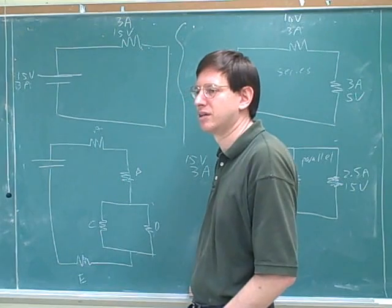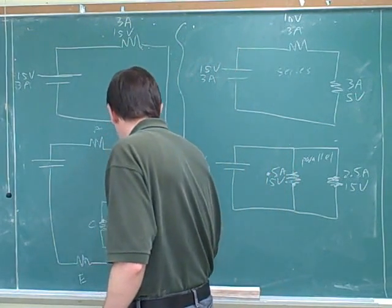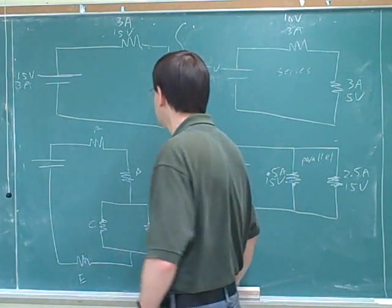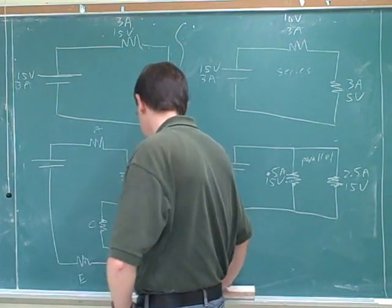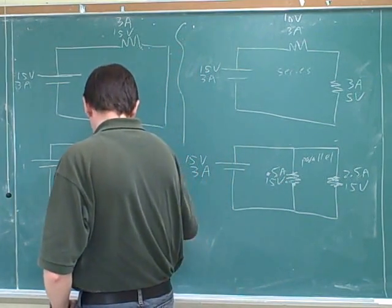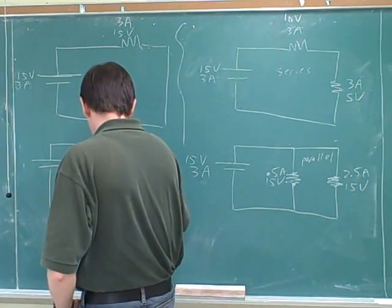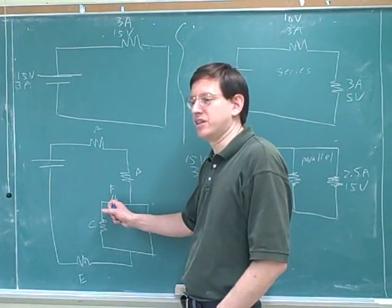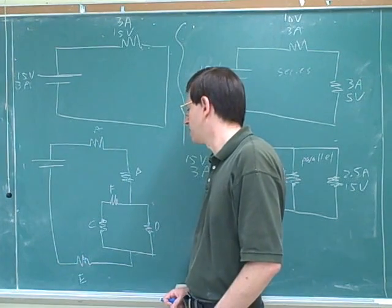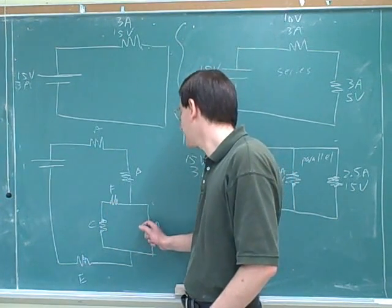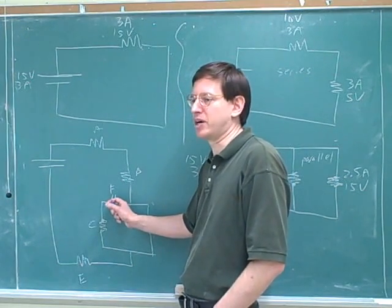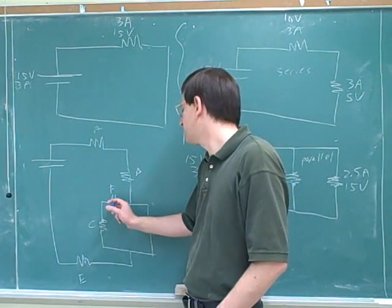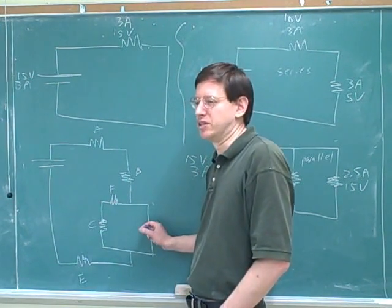Are C and D in parallel? Yes, because the tops are directly connected with no intermediate devices, and the bottoms are directly connected with no intermediate devices. How about now — are C and D in parallel now? No, because now there is an intermediate device. This should make clear what I mean by intermediate devices. The tops are connected, but there is an intermediate device, so these would not be considered parallel. A lot of students get this wrong and think they are parallel because they kind of look parallel, but they're not parallel because there's an intermediate device on the path between the two devices.